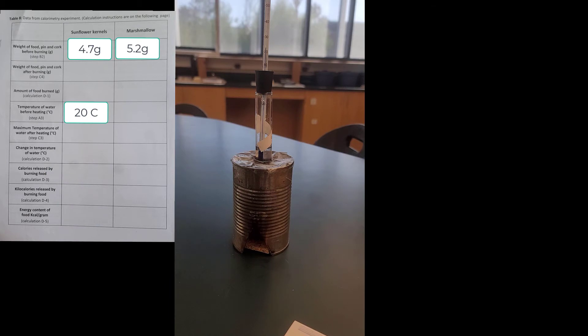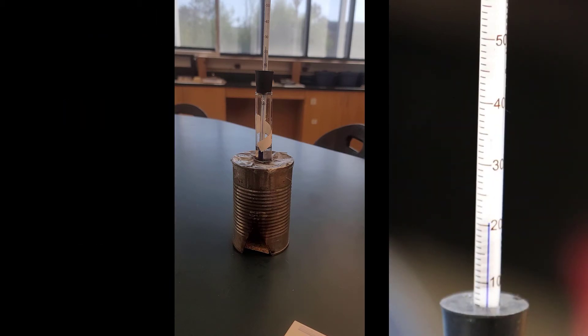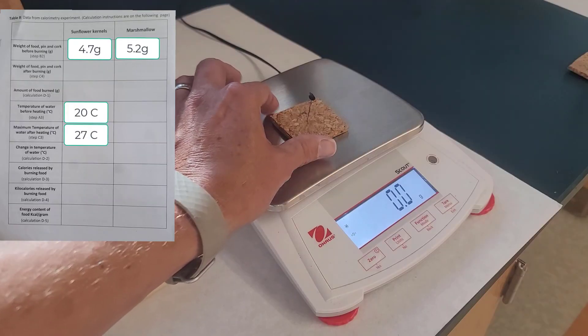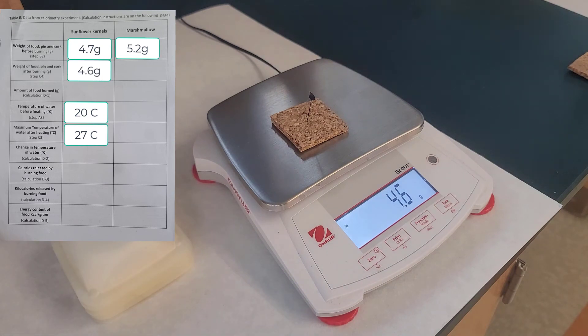By the end of this experiment, we now have how high the temperature went. We had our starting temperature and we have our temperature at the end of the experiment. Now what we do is go weigh the sunflower seed and see if it weighs less because we burned some of it. The difference between what we started with and what we ended with is how much we actually burnt.